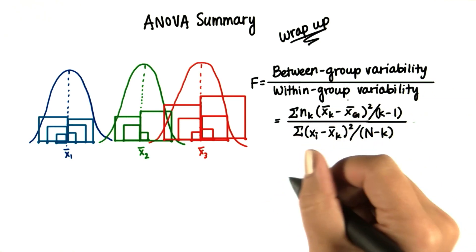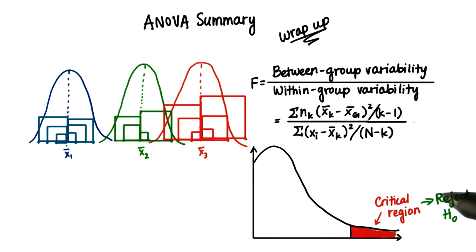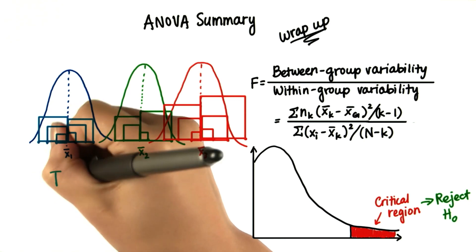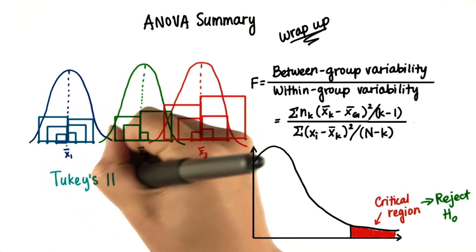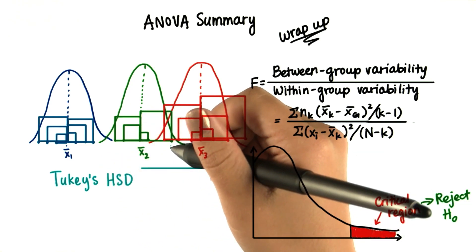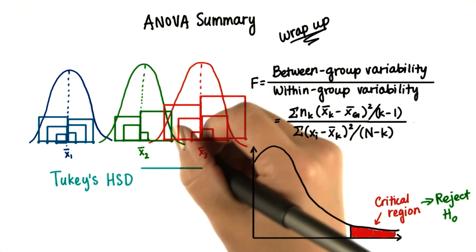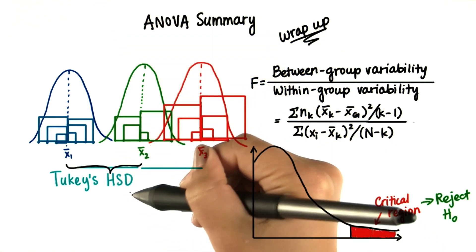There we have our F statistic. And if it falls out here in the critical region, past the F critical value, we'll reject the null. After making a statistical decision, we can use the multiple comparison test. One of which is Tukey's honestly significant difference, which is a value that if any two sample means have a difference greater than that value, they're considered honestly significantly different.